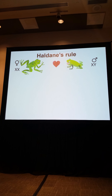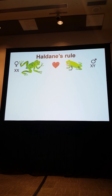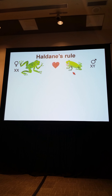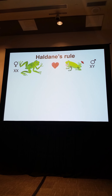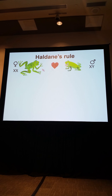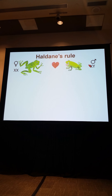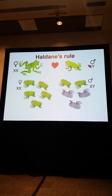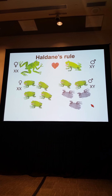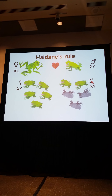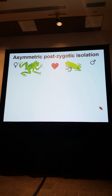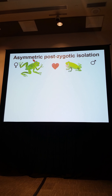I'll quickly go over a couple of the patterns we often see in intrinsic reproductive isolation. The first is Haldane's Rule. Here I'm showing a female frog from one species mating with a male frog from a different species. The female has two X chromosomes and the male has an X and a Y chromosome — the heterogametic sex. What we tend to see is that when there is inviability, sterility, or absence, it tends to be in the heterogametic sex.